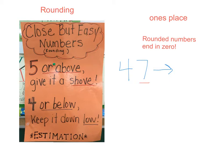Because seven is five or above, above five, we want to round it up. The next number that comes after forty-seven and ends in a zero is fifty. So forty-seven rounds to fifty.